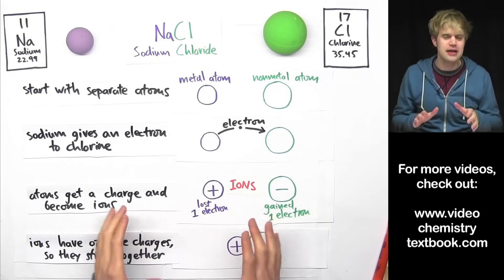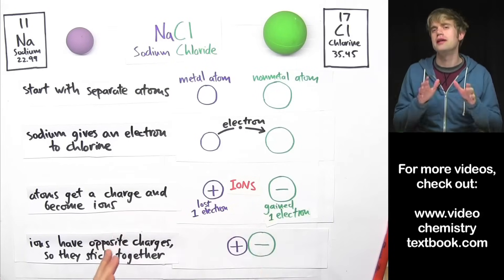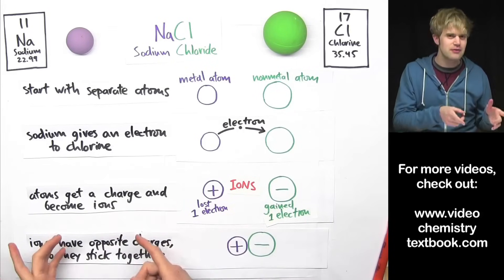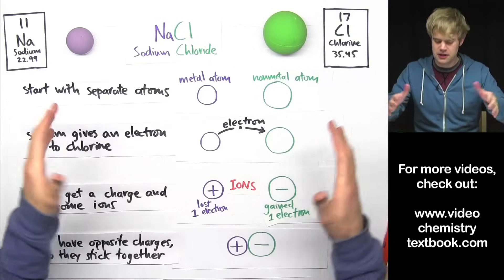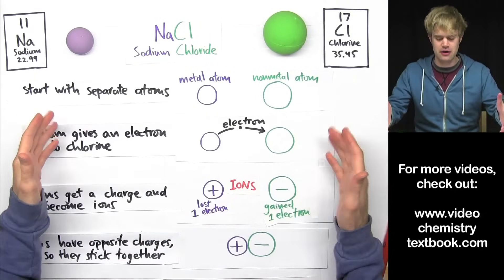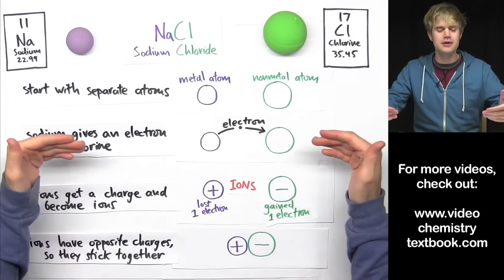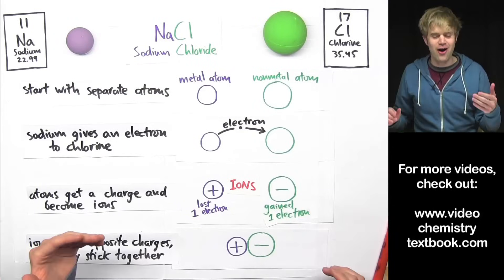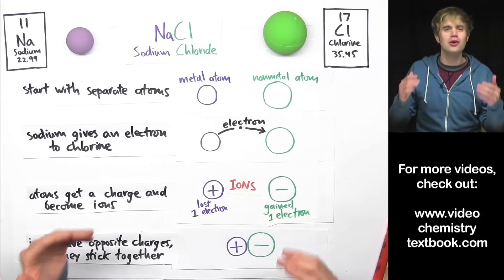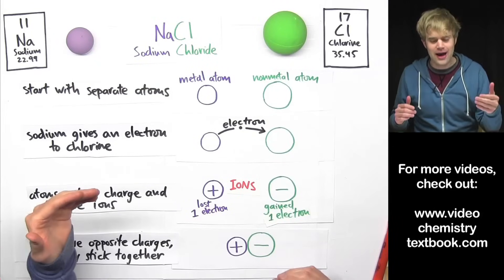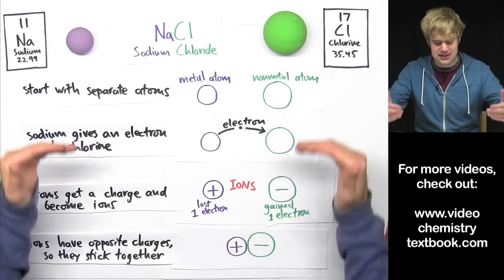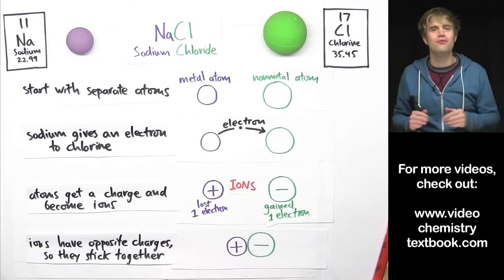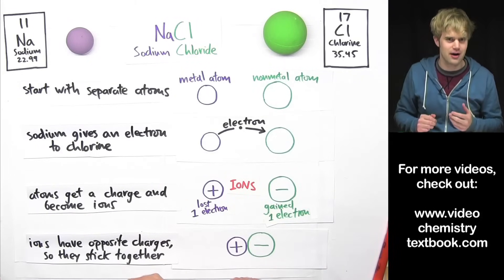Let's talk about ionic bonding in much more depth. In the previous video we talked about the basic fundamentals of how ionic bonds get made in sodium chloride. Now I want to look at why and how these steps happen during the formation of ionic bonds.